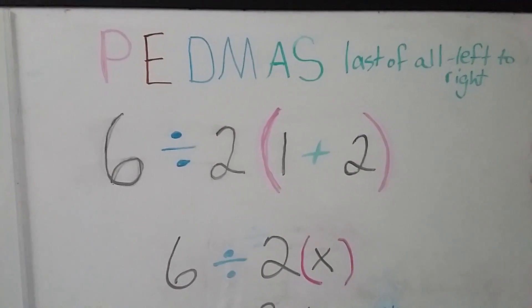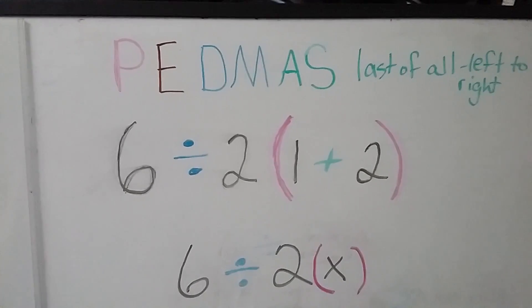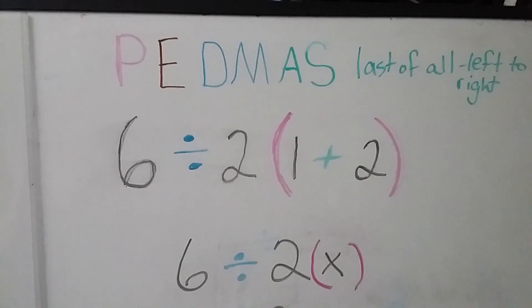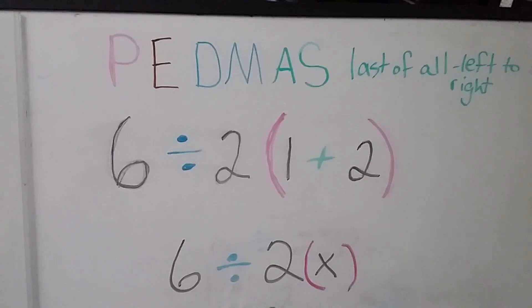Okay, now I'm going to tell you the algebra way of doing this. We're going to assume that we don't know 1 plus 2. And so if we don't know what it is, we're going to replace it with an x.